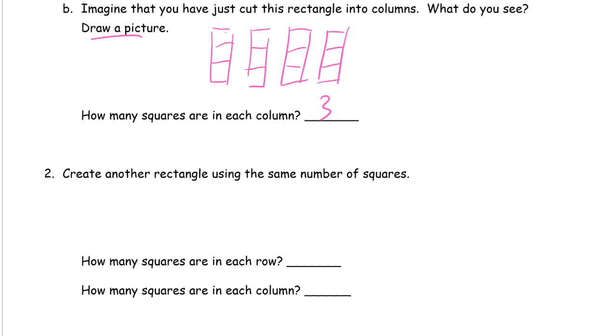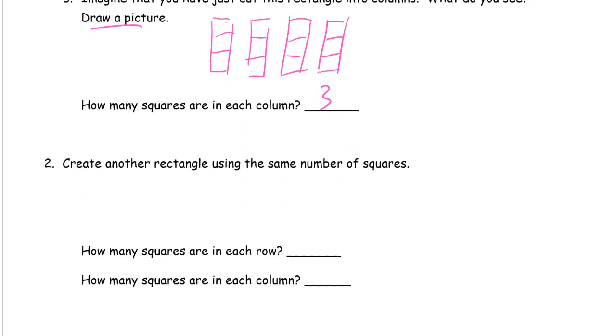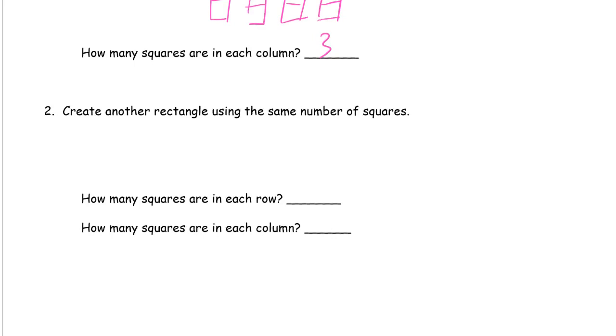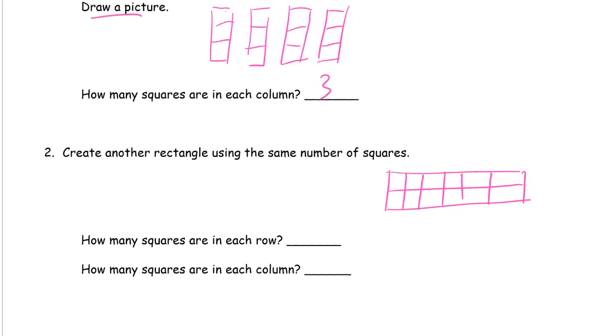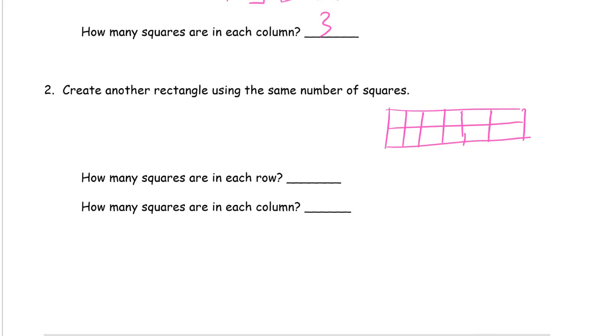Create another rectangle using the same number of squares. So how many squares are there? You can count them. There's 12. So there are a lot of different correct answers for this. But I'm just going to make one up here. What if I had 2 rows of 6? And you should draw a picture of this. Whatever you come up with, draw a picture of it. How many squares are in each row? I have 6 in each row. And I have 2 squares in each column.